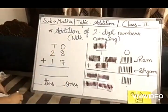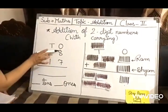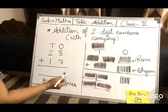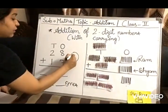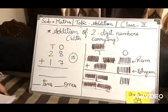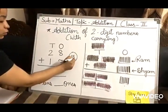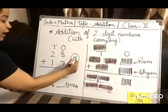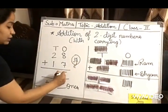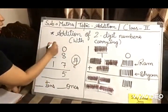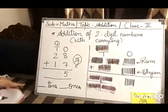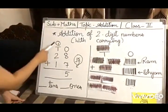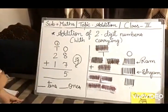Now we can understand this numerically. 8 plus 7, just now we have done - the sum is 15. But children, 5 is on the ones place and 1 is on the tens place. So 5 we will write here in the ones column, and 1 will be carried forward here.